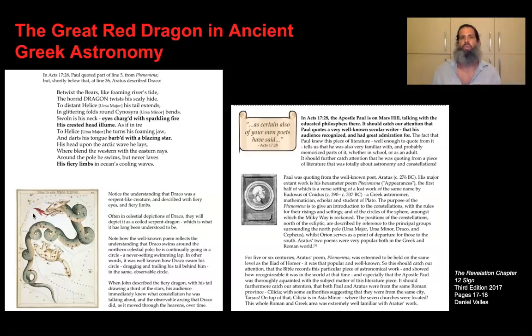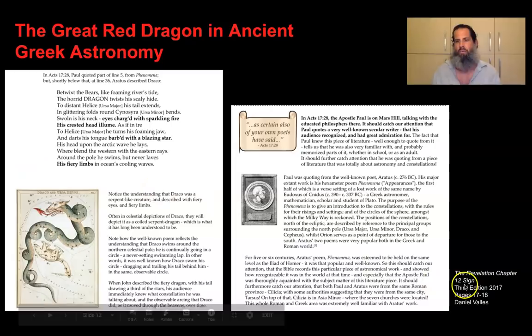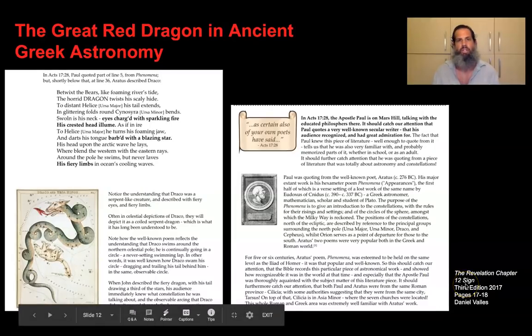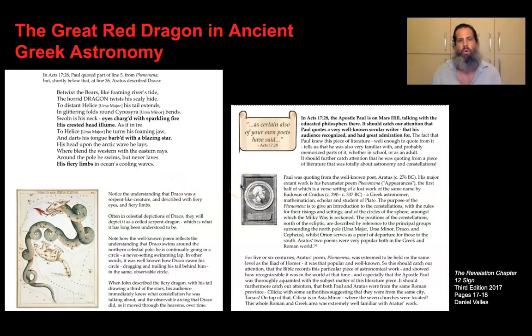The red dragon, or the great dragon, in ancient Greek astronomy was identified as Draco. What you're looking at here is a couple of screenshots from the Revelation chapter 12 sign, third edition, 2017, pages 17 and 18, by Daniel Vales. In this article, he uses a couple of Wikipedia sources that Aratus, who is a Greek poet from 276 B.C., wrote The Phenomena, a poem about the constellations. Actually, Paul quoted a line from this poem in Acts chapter 17, 28.